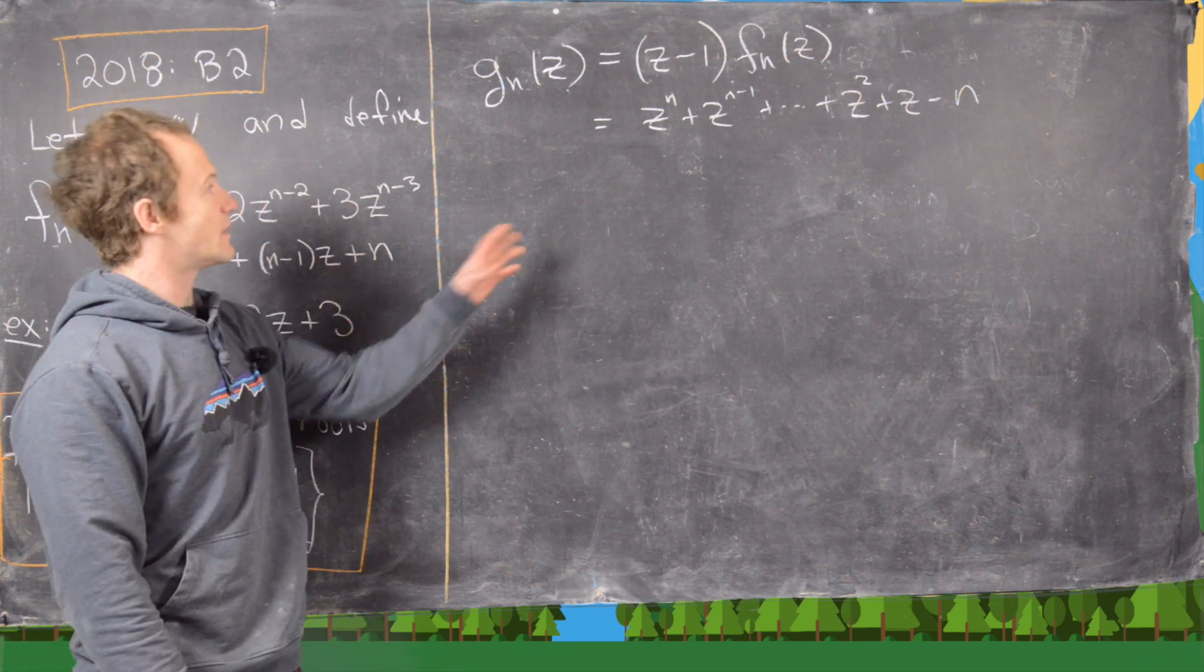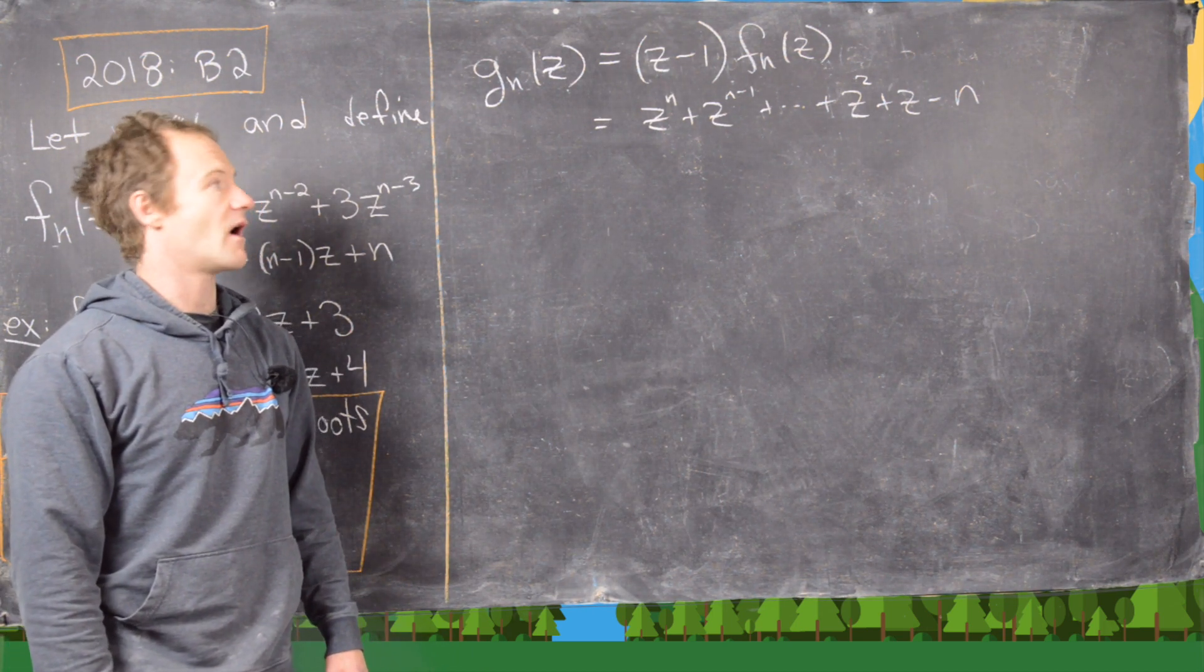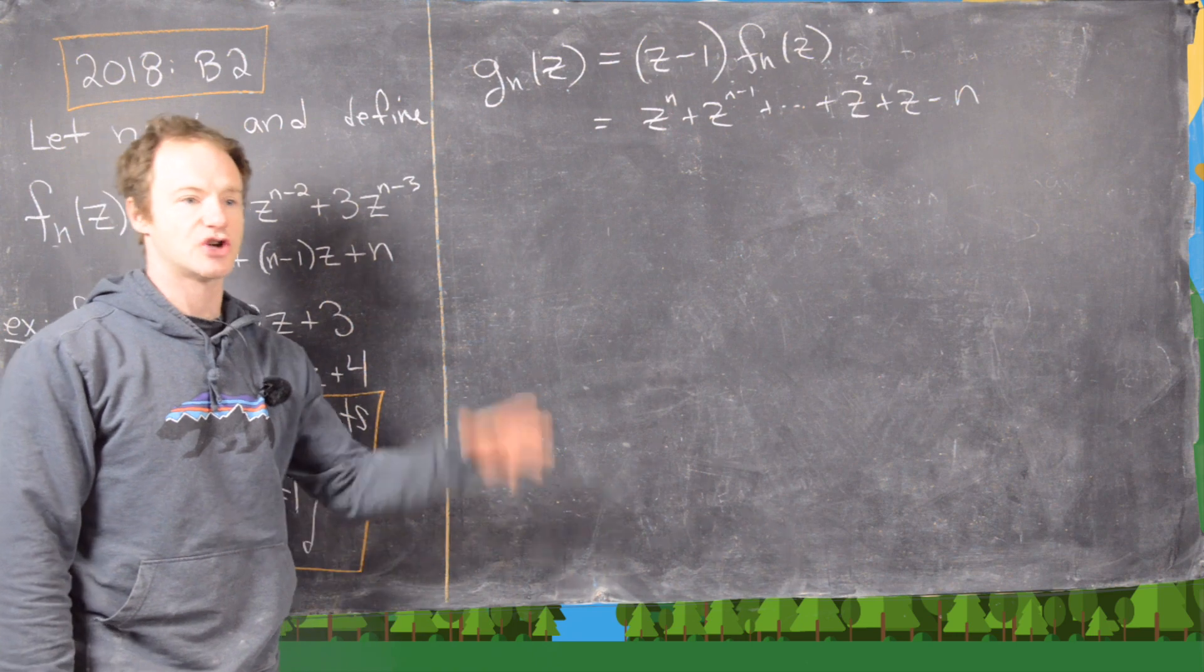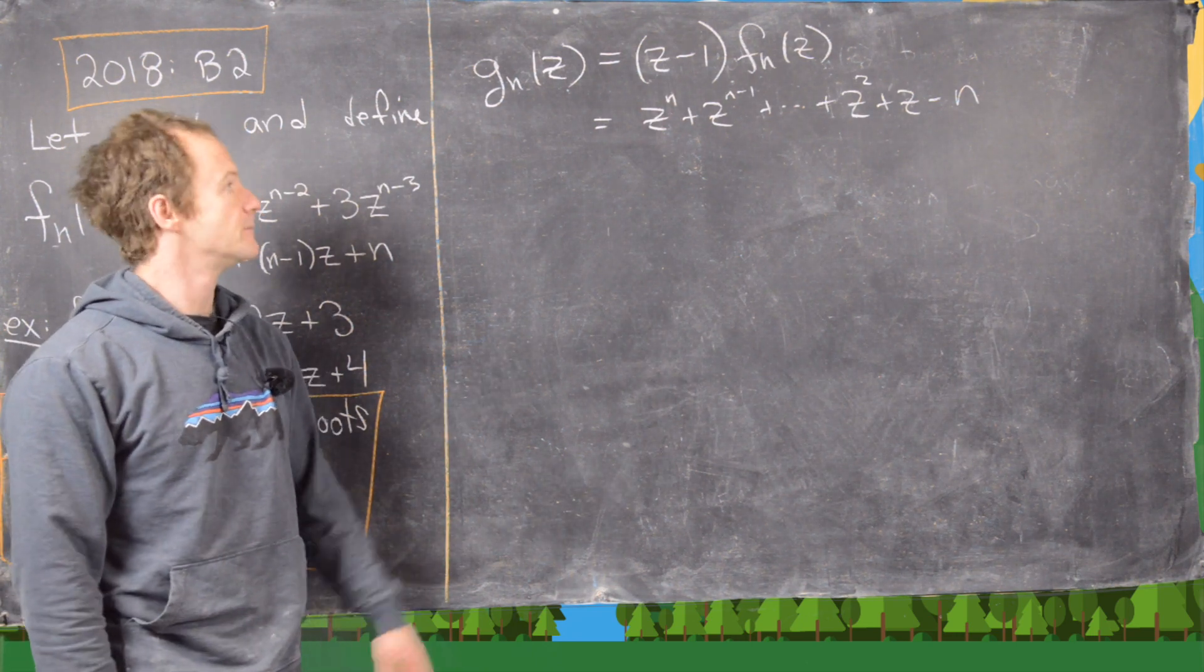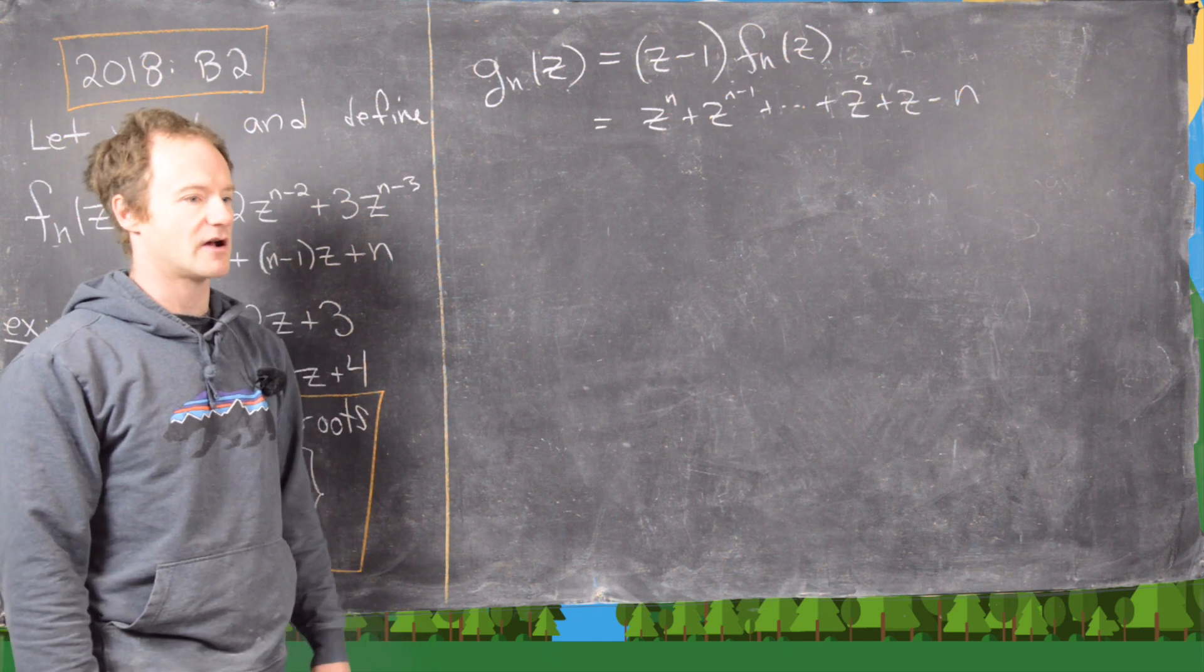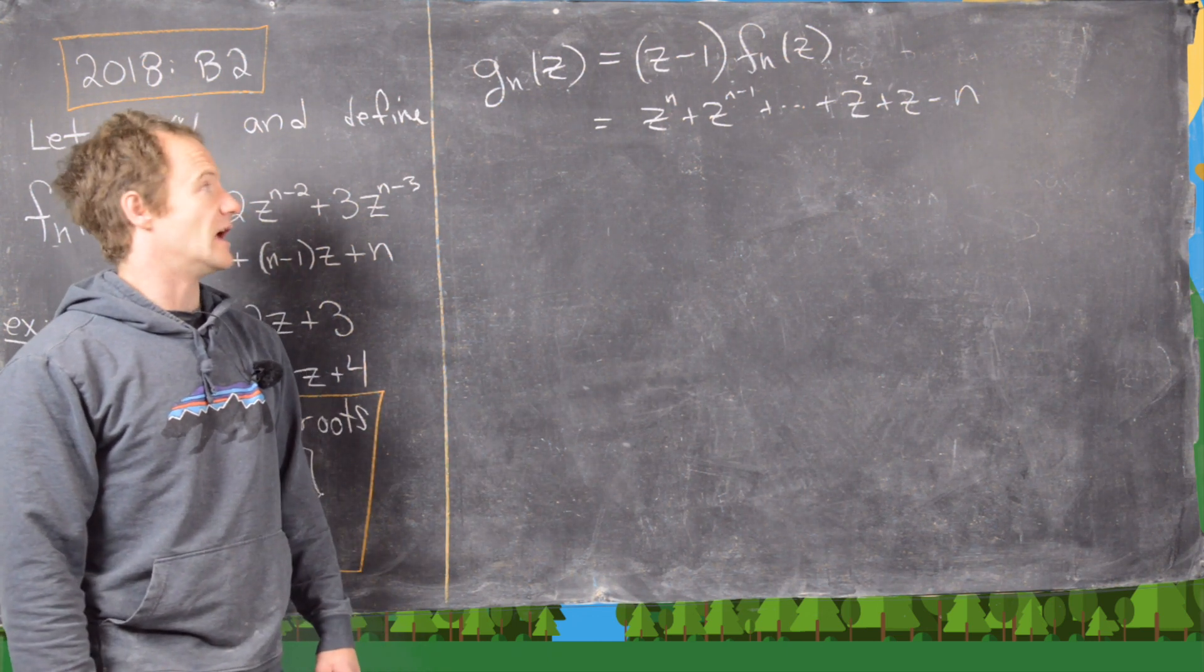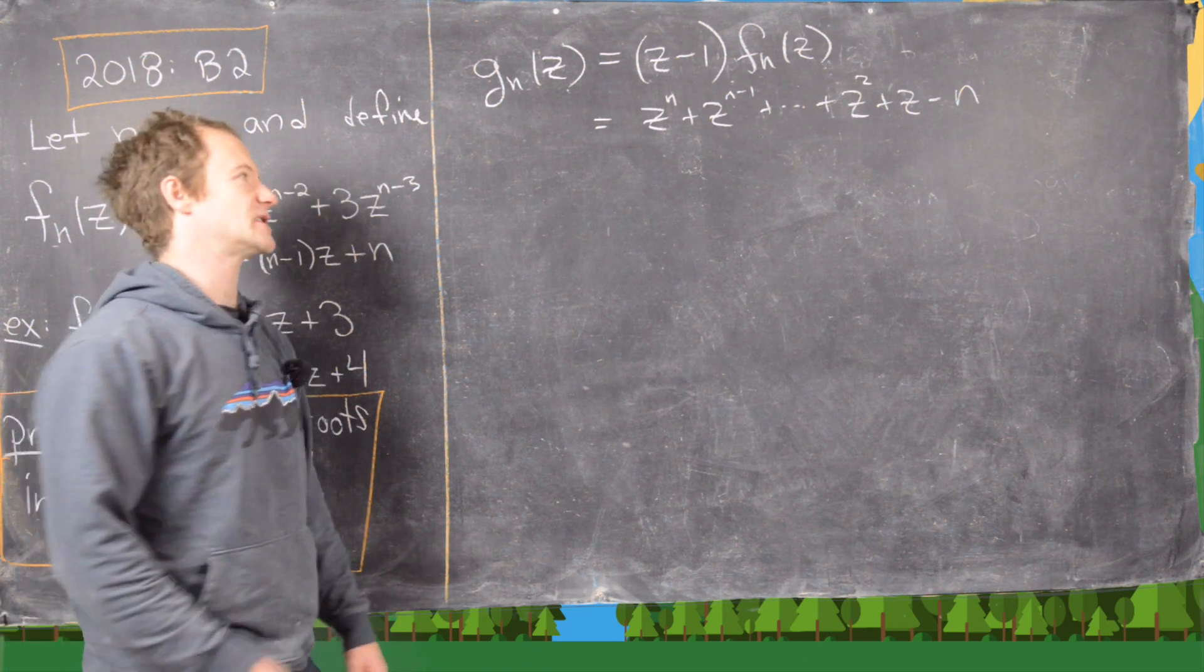Now the next thing we want to do is look at the modulus of gn(z), and if we can get a handle on what its modulus is, show that that's never zero. Unless z equals 1, which we'll talk about later, then if the modulus is never zero, then it would have no roots in the space that we're looking for.